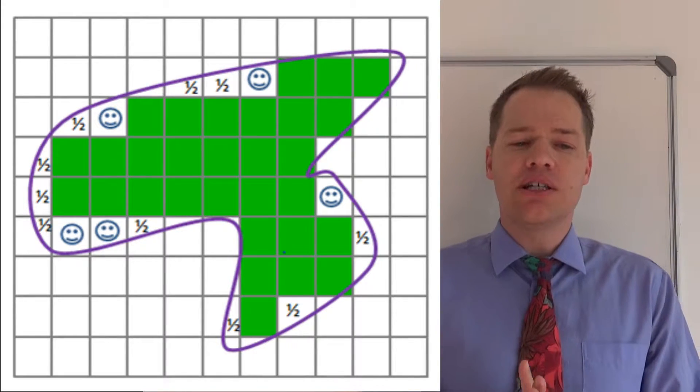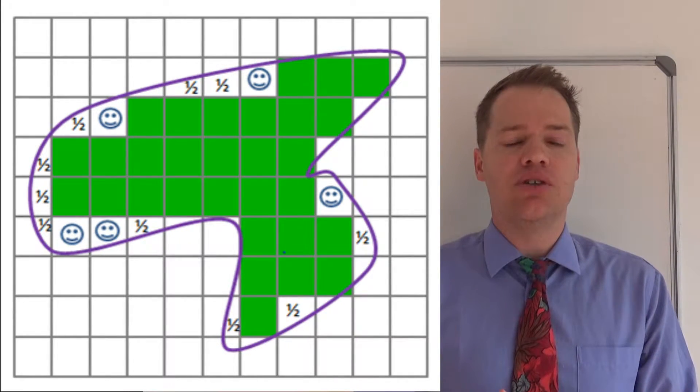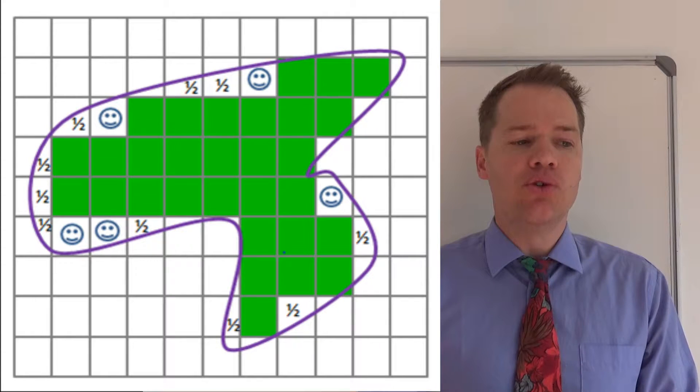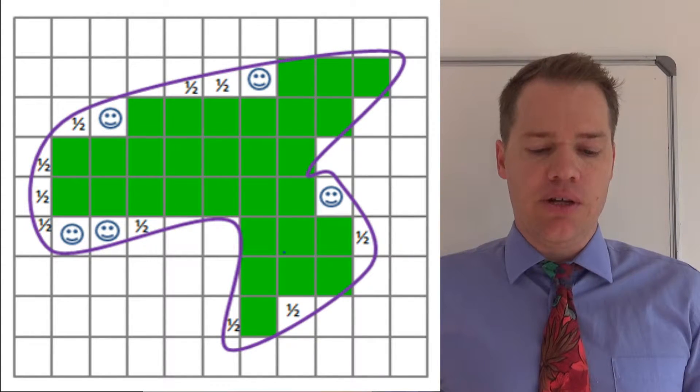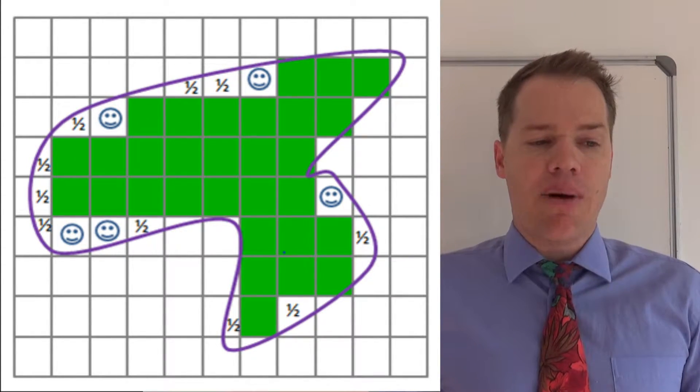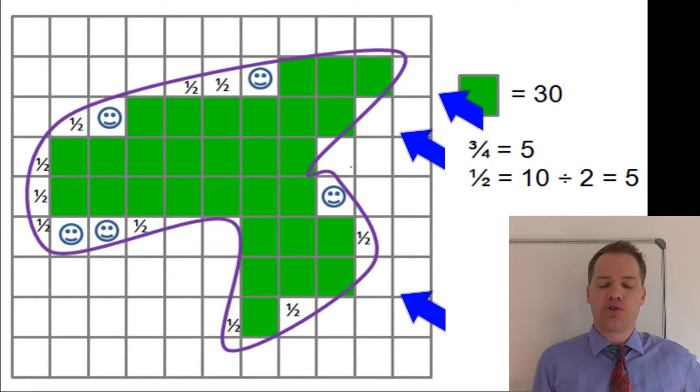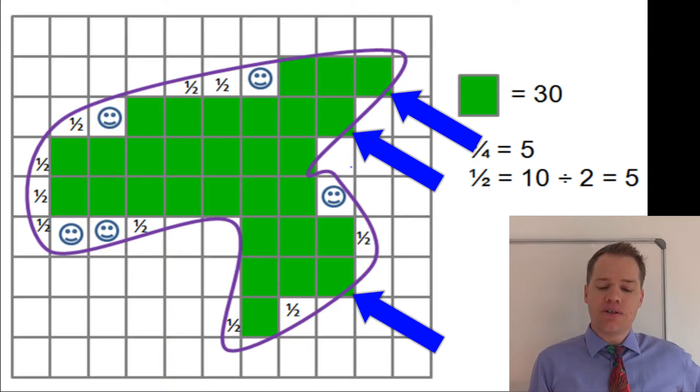We are going to assume that the teacher has given you an area, a scale, and the grid is already there. So what you are simply going to do is you are going to count all the full squares first, and you will see that there are about 30 squares. Now you might have a question: not all of the squares are complete squares.